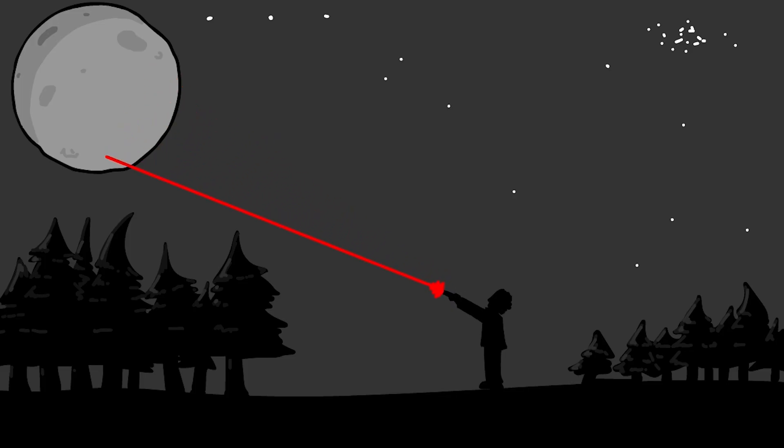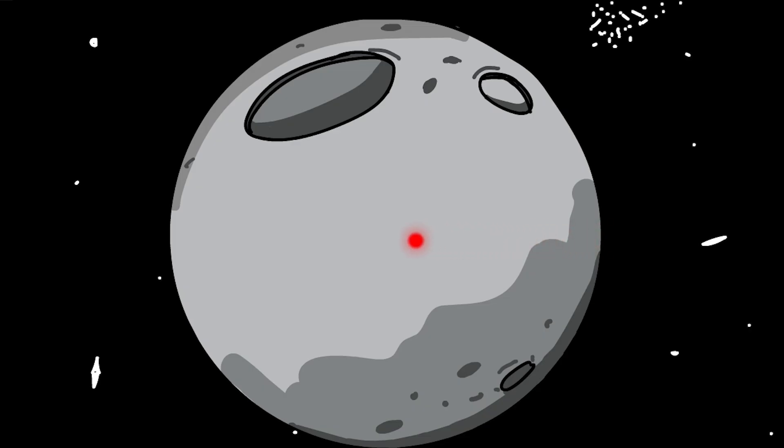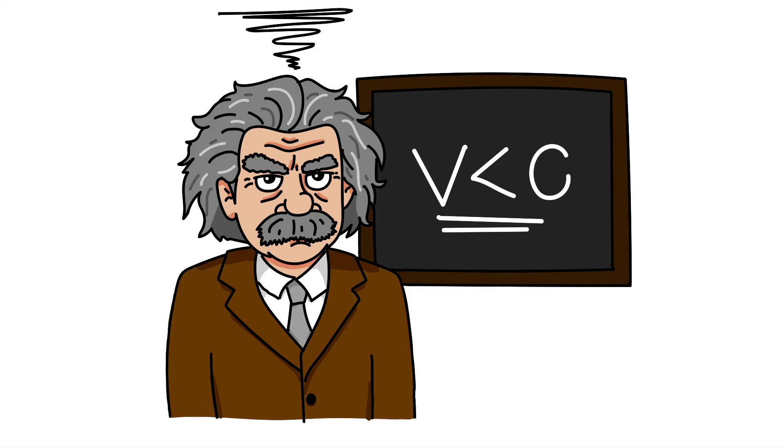If you take a laser pointer, aim it at the moon, and then quickly flick your hand, you'd see a laser spot travel across the surface of the moon faster than the speed of light. Hang on, is that even allowed? Didn't Einstein say nothing can travel faster than the speed of light?